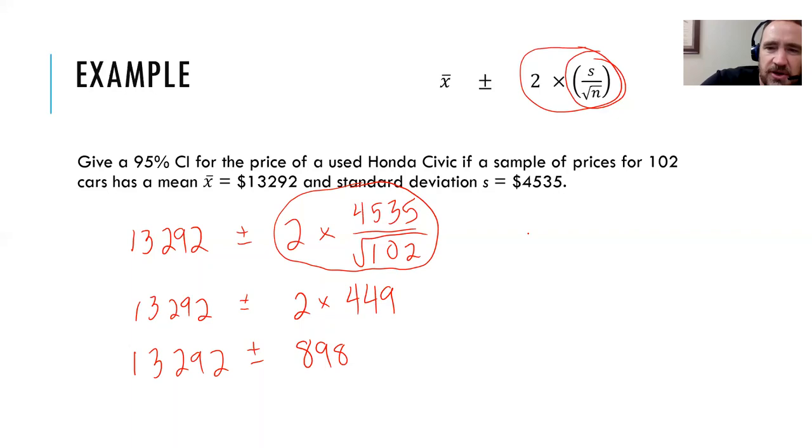So my confidence interval, 95% confidence interval, is going to be $13,292 minus $898. And I'm just going to go ahead and punch that in. So that's $12,394. And that's the low end of my confidence interval. And the high end, I'm going to go $13,292 plus $898, $14,190. So there's my 95% confidence interval. Let's talk for a moment about how to interpret that.